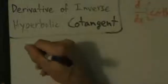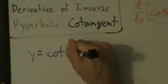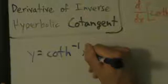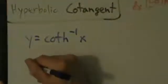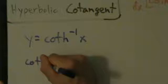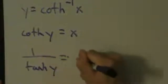Just like with the other restrictions, this isn't really a calculus thing — it just comes from the definition of the inverse hyperbolic cotangent function. So let's see why this is true. If we let y equal coth inverse of x, this means coth(y) equals x. And remember, coth is 1 over tanh, so this means 1 over tanh(y) equals x.